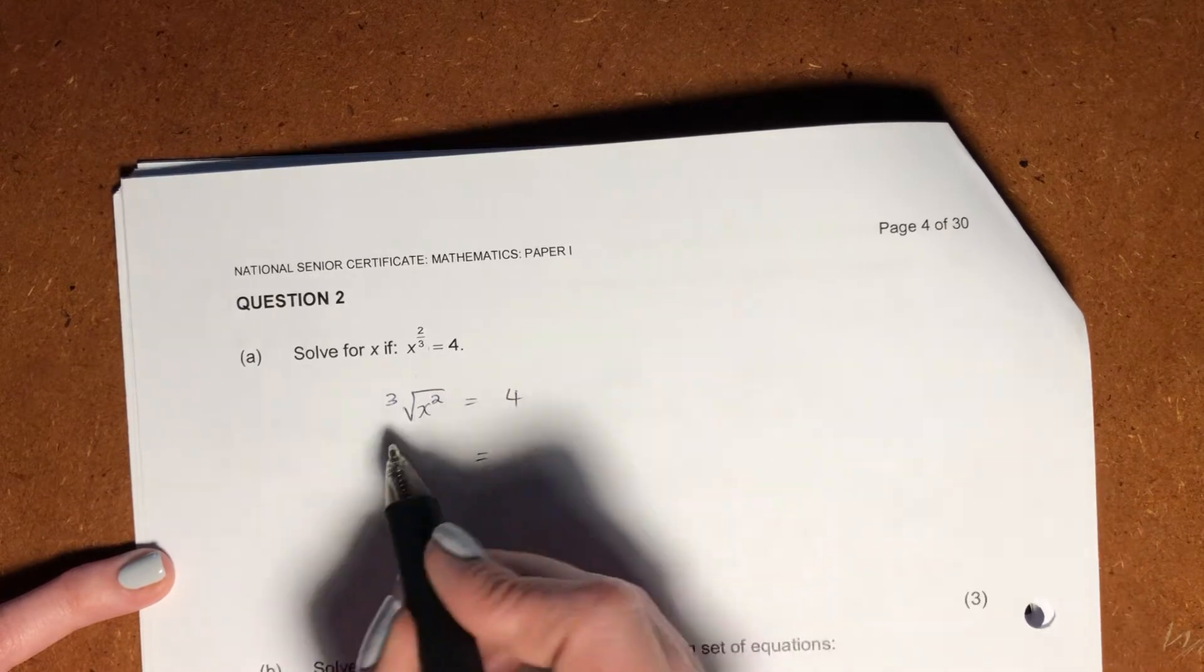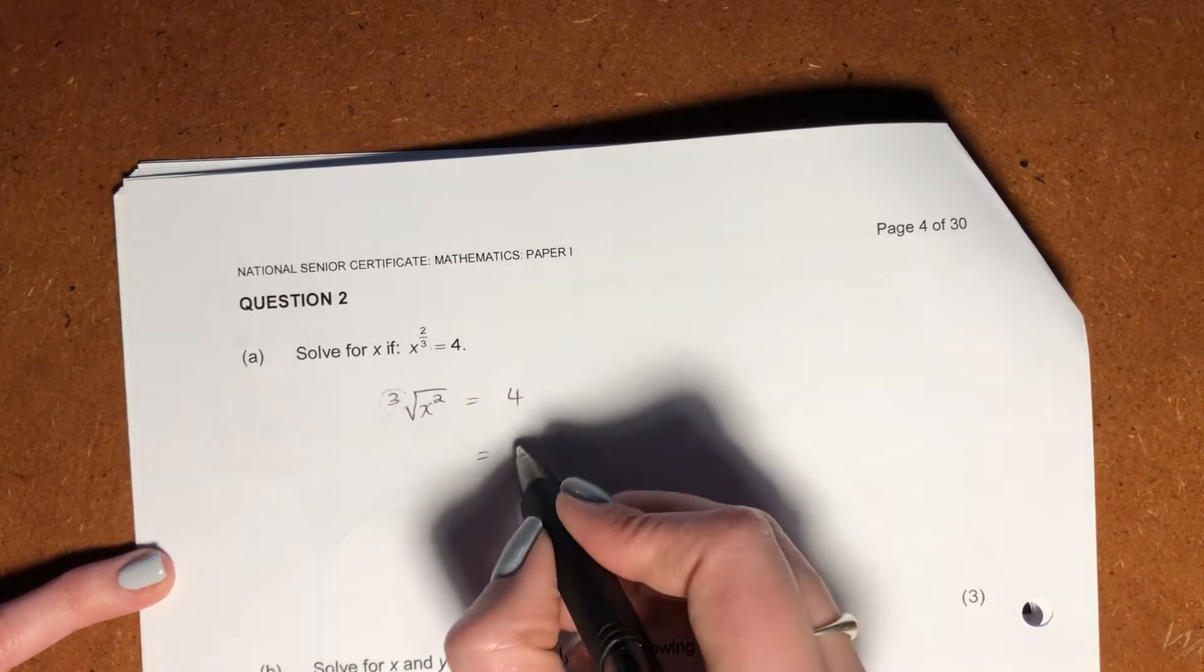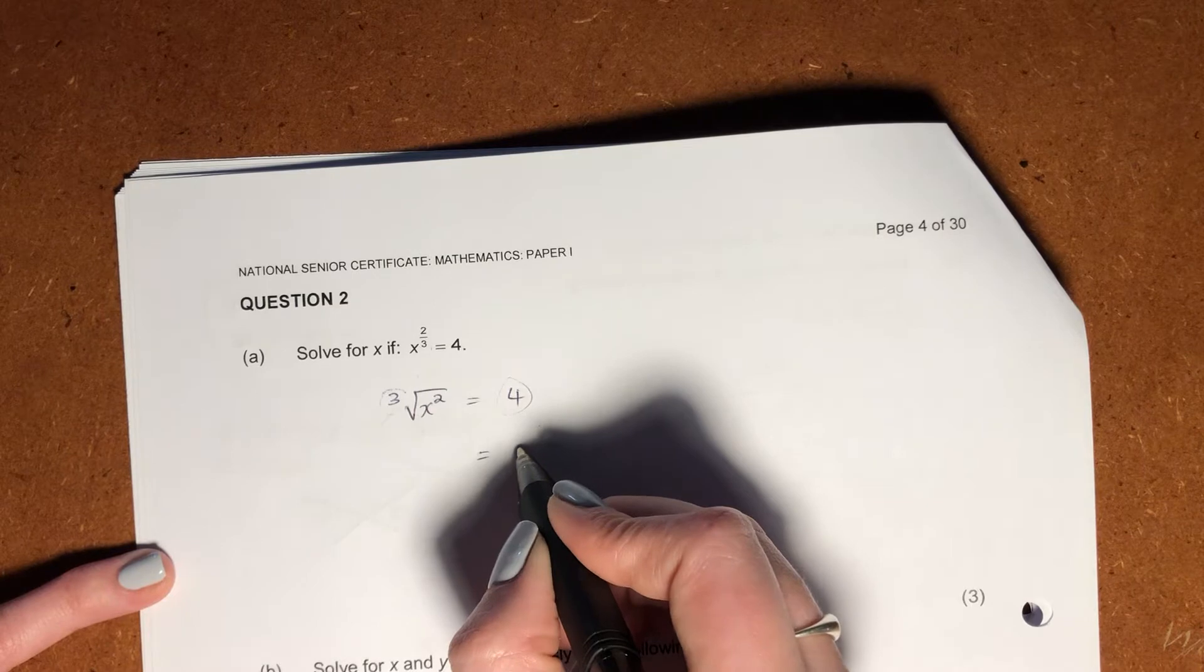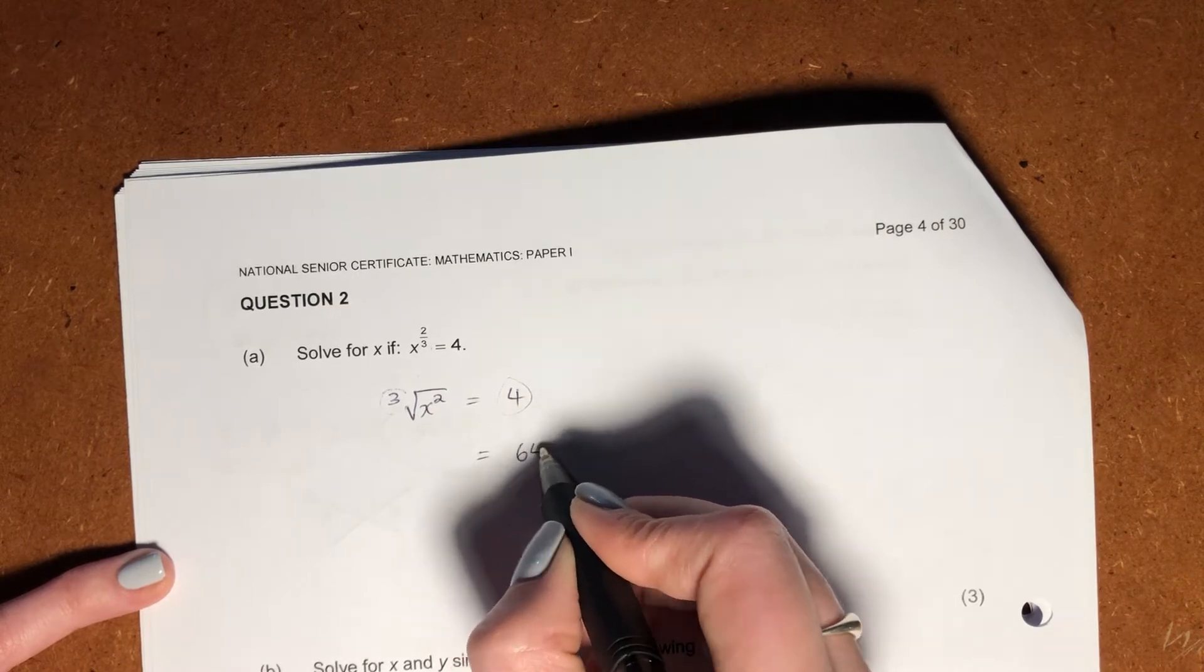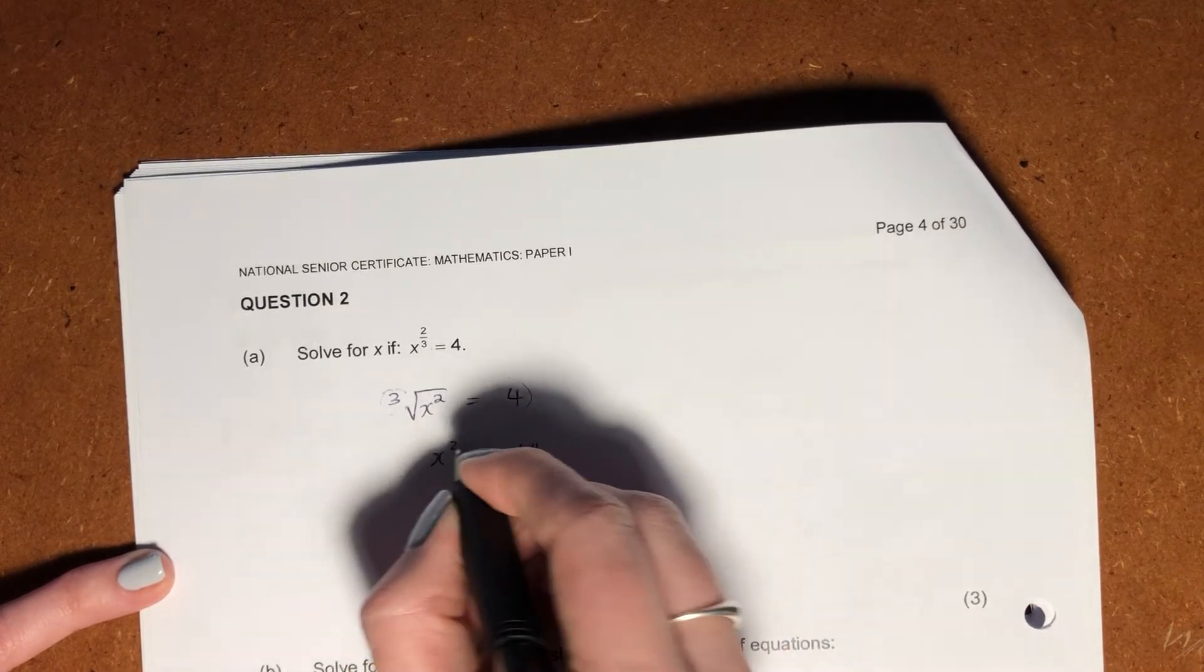So now we say, okay, what is the opposite of a cube root? It would be a cube. So we're going to cube 4. If you put that into a calculator, it is 64. And this becomes x squared.